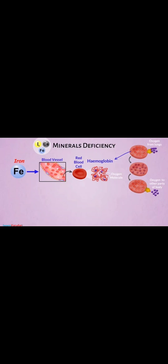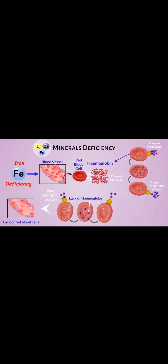The next important mineral is iron. Iron is necessary for making a protein called hemoglobin. Hemoglobin is the red color pigment present in the blood that carries oxygen to all parts of the body. It is present in the red blood cells and helps in carrying oxygen from the lungs to all parts of the body.